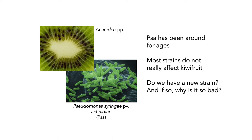PSA is shorthand for Pseudomonas syringae pathovar actinidiae — a particular type of Pseudomonas syringae that attacks kiwifruit. The really interesting thing is that PSA has been around for ages, and most known strains don't really affect kiwifruit, or do so in very minor ways. When this outbreak occurred, there were big questions: do we have a new strain, has it come in from outside the country or evolved here, and why is it so damaging?